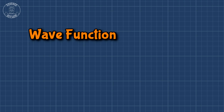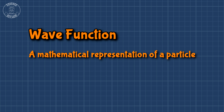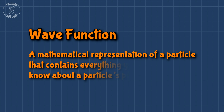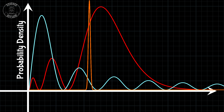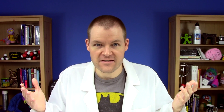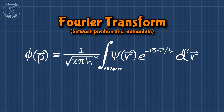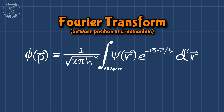What's a wave function? A wave function is just a mathematical representation of a particle. It contains everything you can possibly know about a particle's properties. There is only one single wave function for a particle in a given state. All three of these graphs from the previous video are found using the same wave function, just written in terms of different measurements. In fact, you can write that wave function in terms of whatever measurement you want to make a prediction about. All you need is a Fourier transform. They're a total pain in the butt, but they work.